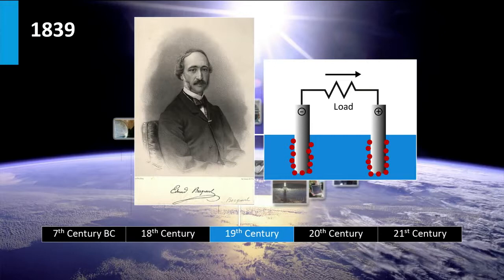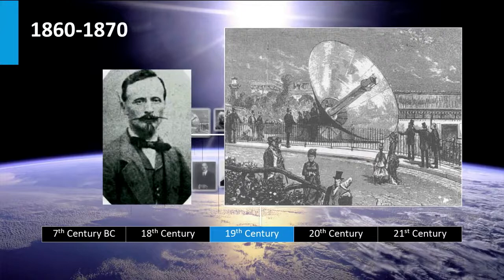In the 60s and 70s of the 19th century, the French physicist Auguste Mouchet was developing solar powered steam engines. He believed that the coal resources were limited. He developed the first parabolic trough solar collector. As coal became cheaper, the French government decided that solar energy was too expensive and stopped funding Mouchet's research.